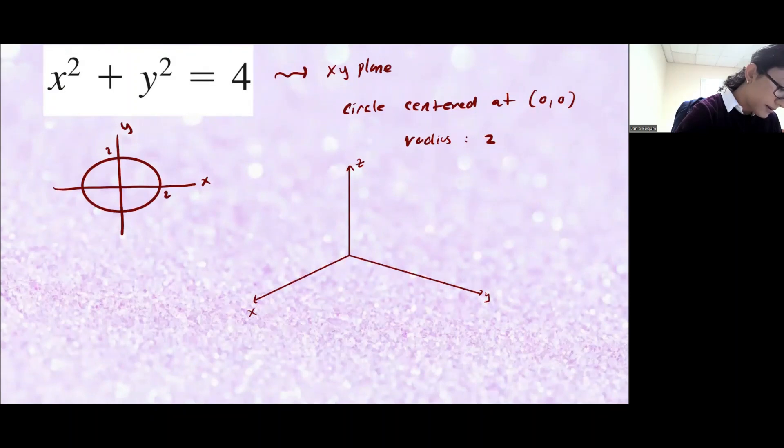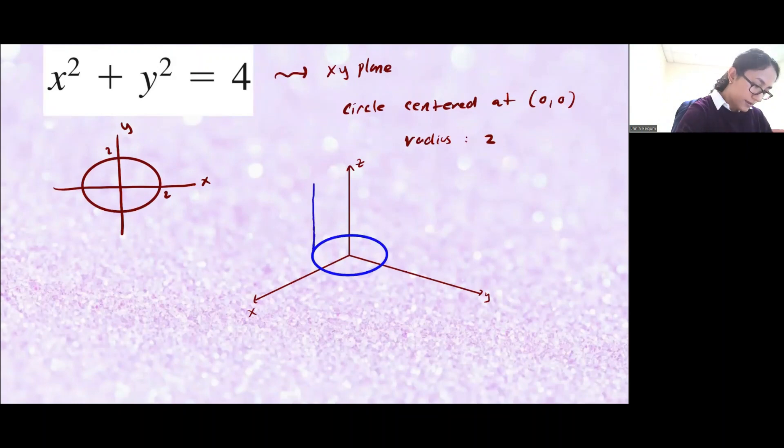I'll do my best to show you the picture. So it's going to look something like this. All right, so like that. And then it's just going to create lots of circles along the z-axis, which will give you this picture of a cylinder.